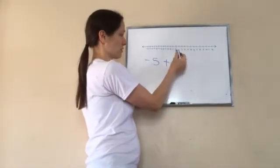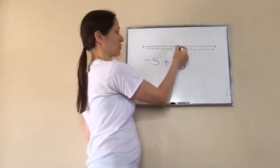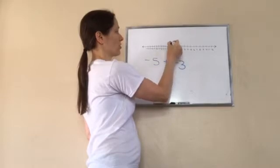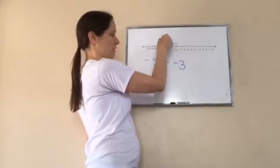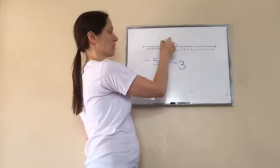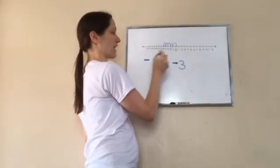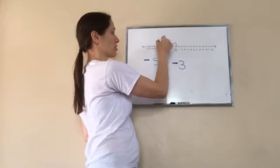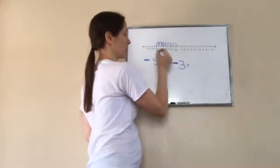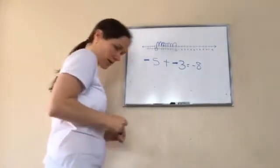Negative five plus negative three — you go back five to the left: 1, 2, 3, 4, 5. Plus negative three — because it's negative you keep going to the left — so go left three more: 1, 2, 3. The answer is negative eight. Negative eight — very good! Do you understand how we do that?